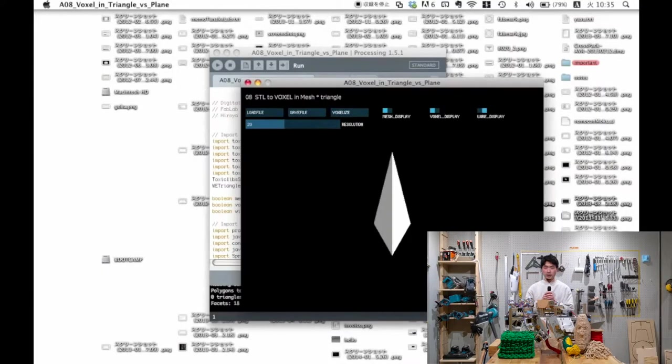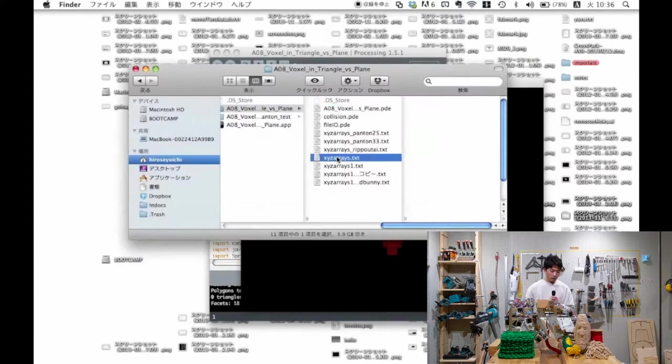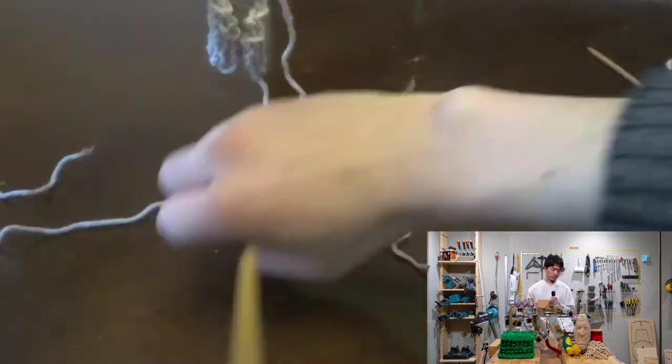Import a 3D data, then voxelize it, then slice it into each layer's knitting pattern, then knit.